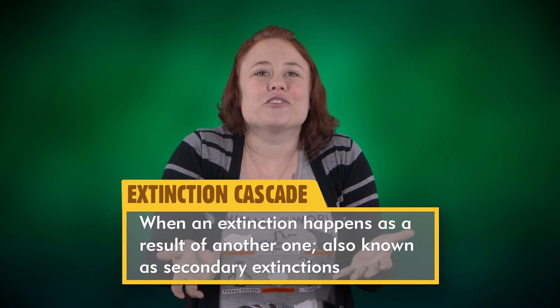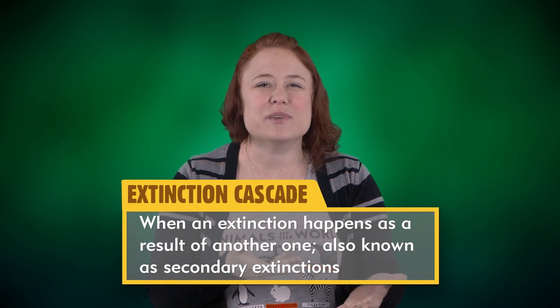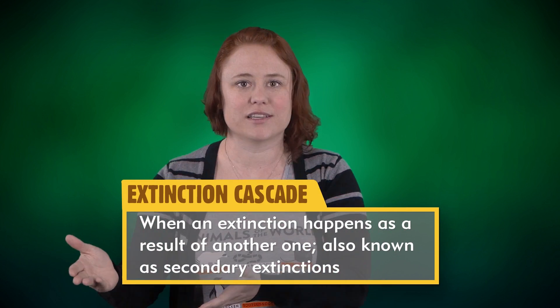What about extinction cascades? This phrase refers to losing species in a sort of chain reaction process. Imagine dominoes knocking each other over, but replace those dominoes with living species. Directly losing one species is called a primary extinction, and if that extinction causes another, we call it a secondary extinction, and so on.